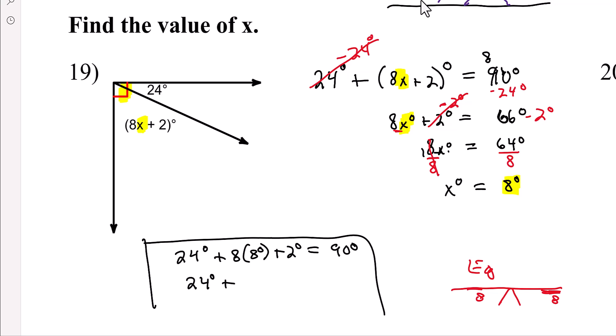24 plus 8 times 8, that's going to be 64 degrees, plus 2 degrees. Well, 24 plus 64, 88 degrees, plus 2, 88 plus 2 is 90 degrees. So this answer works.